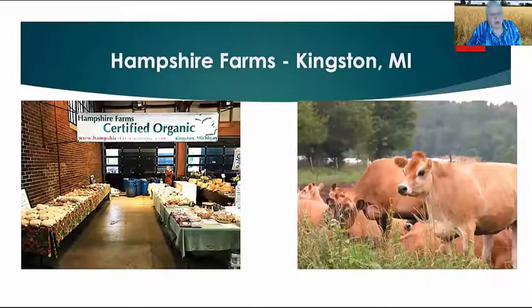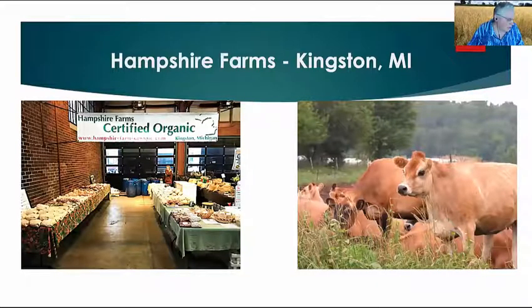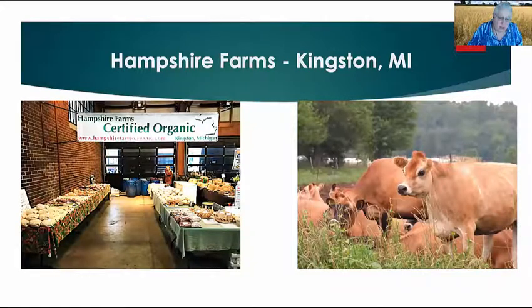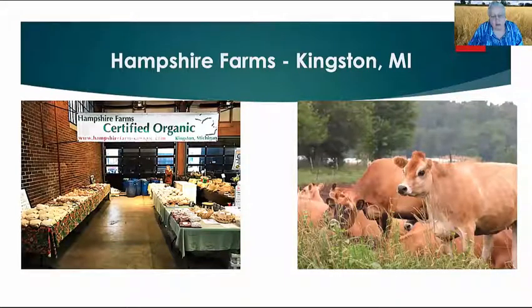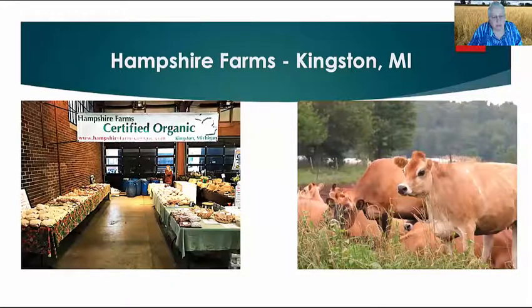Randy Hampshire got his ag production degree from MSU in 1973. Around 1988, BST — a growth hormone fed to cows to increase milk volume — and Roundup came on the scene. Randy became curious about the implications for his land, his animals, and the environment. He did a lot of reading, attending meetings, and educating himself. He decided in 1988 that organic was the way to go so he could reduce these inputs and get credit for it in the marketplace.